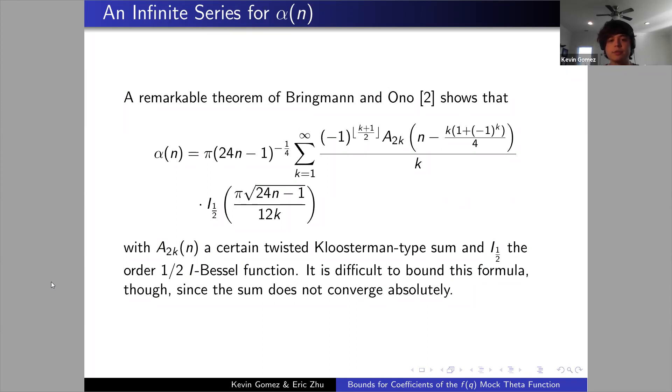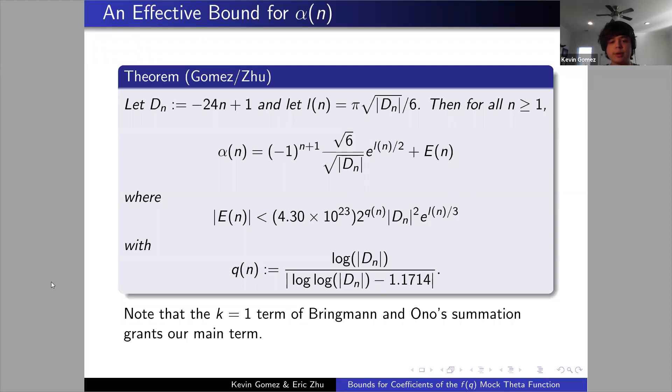Through that approach we were able to obtain good asymptotics for alpha of n, specifically effective error terms. We have D_n is effectively a discriminant, then we have this alternating main term and then an error term with an effective bound, which notably agrees with the k equals 1 term of the Bringmann-Ono summation. So yes, this is the primary building block from which we obtain both our demonstration of the conjecture as well as some other nice corollaries that follow from it, which I'll be discussing.